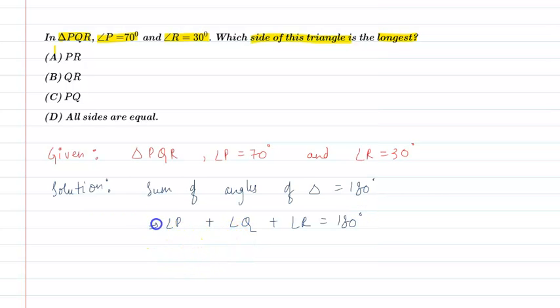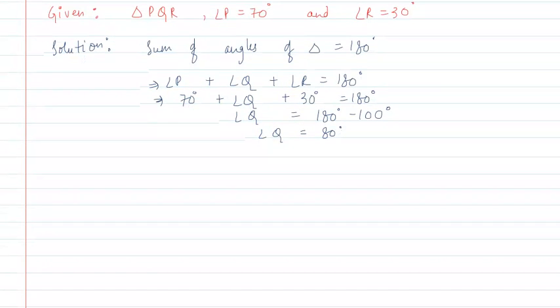It will be 70 degrees plus angle Q plus 30 degrees equals 180 degrees. So angle Q equals 180 degrees minus 100 degrees, which is 80 degrees.